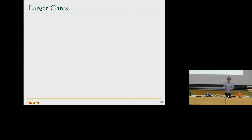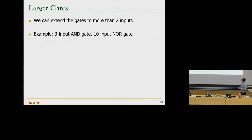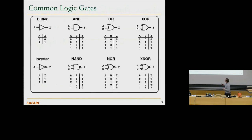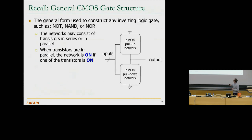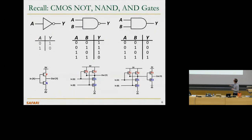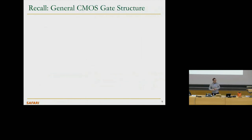We can also build larger gates — you can extend gates to more than two inputs. For example, a three-input AND gate: if you want a three-input AND, you add another PMOS transistor in parallel and another NMOS transistor in series, giving a three-input NAND, and then add an inverter at the end. You can build three-input NAND, four-input NAND, five-input NAND and then invert.